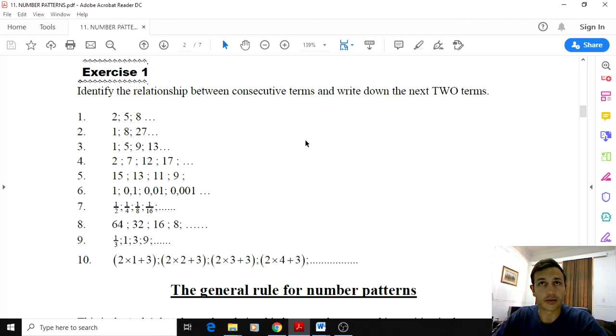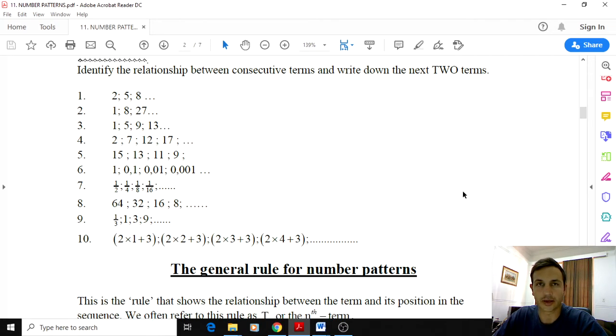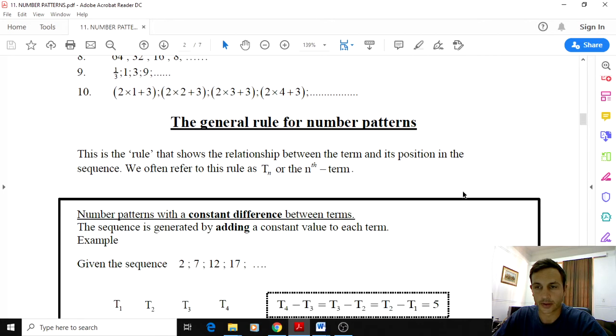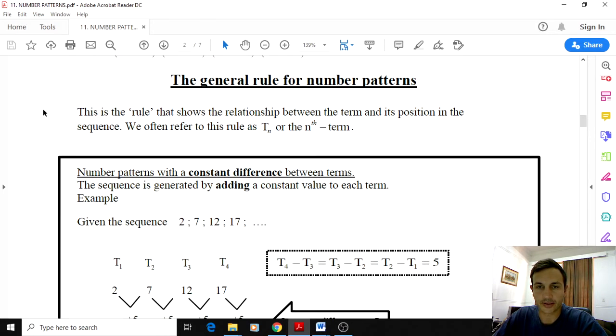The more challenging part is finding the general rule for a pattern. But I'm going to explain it to you and I'm pretty sure you will get it very quickly if you haven't done so already. The general rule for number patterns shows the relationship between the term and its position in the sequence. We often refer to this rule as t_n or the nth term.